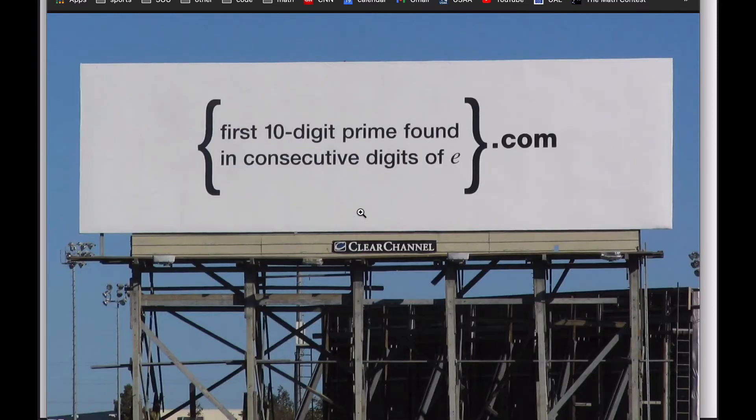This actual billboard existed in the Silicon Valley in 2004. In fact, there were 10 of these posted in major metropolitan areas around the country. So millions and millions of people saw this billboard maybe on their way to work or something. And the vast majority of those people were like, huh, I don't get it. Whatever. Moving on. And completely forgot all about it. But not everybody did. A few people saw this and they're like, E? I'm interested in E. I have an affinity towards math or programming or something. I wonder what the first 10-digit prime found in consecutive digits of E is.